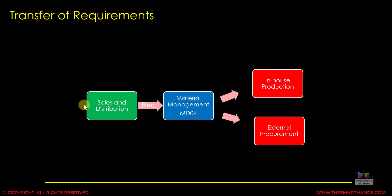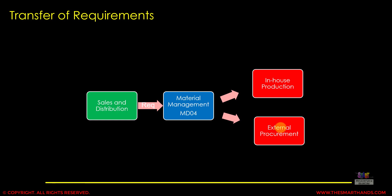Once the system confirms the delivery date and you save the order, the system sends the requirement from the SD module to the MM module. In the MD04 transaction you can see all the requirements. MD04 is one of the most important transactions from the material planner's point of view — they can see all requirements, upcoming requirements, and stock levels. The MM team will then start procurement, either external procurement from an outside vendor or in-house production, raising purchase requisitions or purchase orders accordingly.